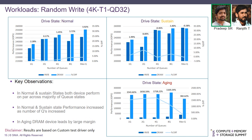In the case of random write with 4K chunk size, 1 thread, queue depth 32, in the normal and sustained states HMB and DRAM performed on par with each other, and in these two states performance increased as the number of queues increased. In the aging state, across all queue configurations, DRAM outperformed by a large margin compared to HMB.